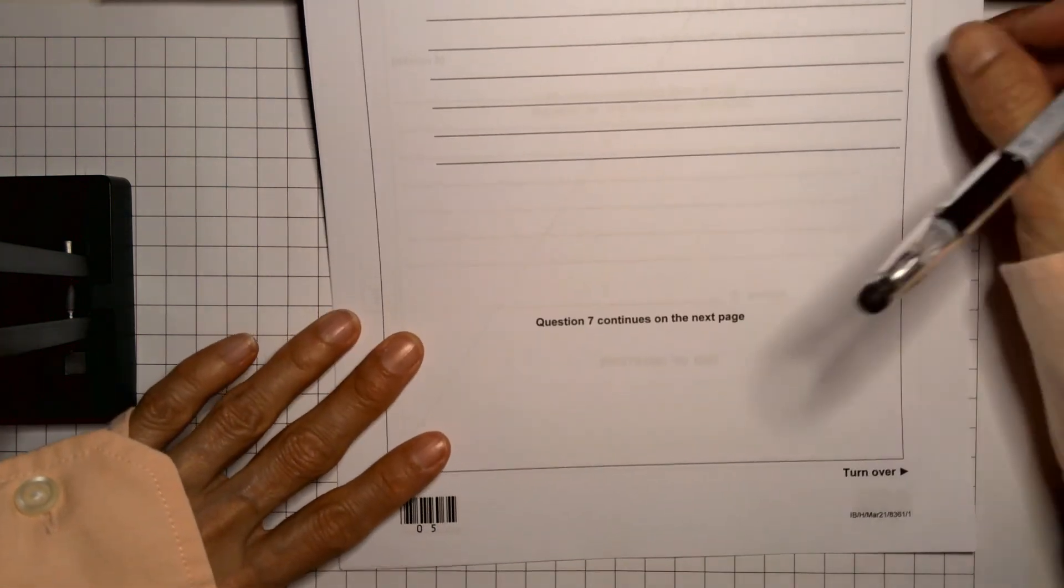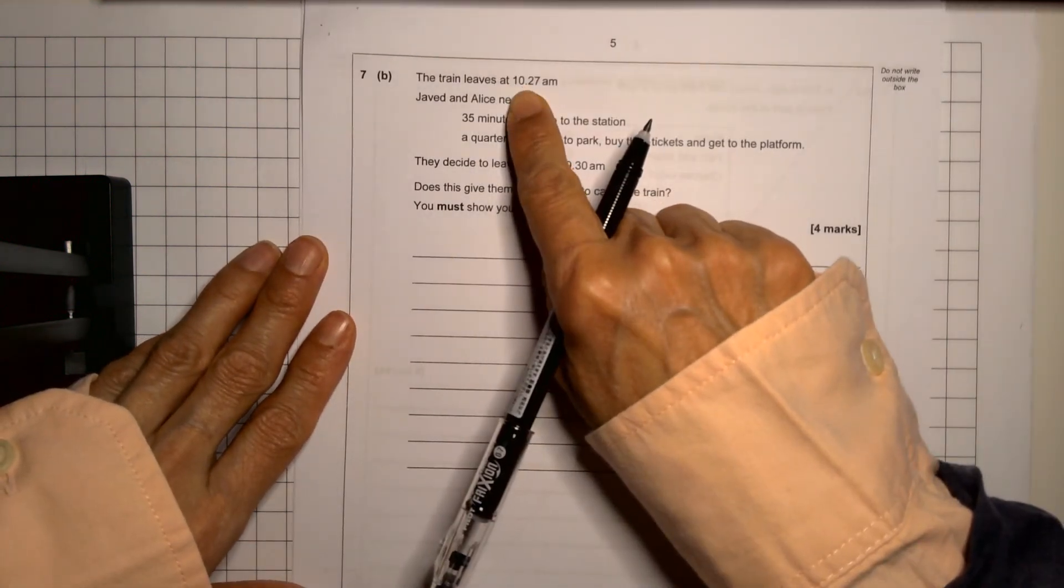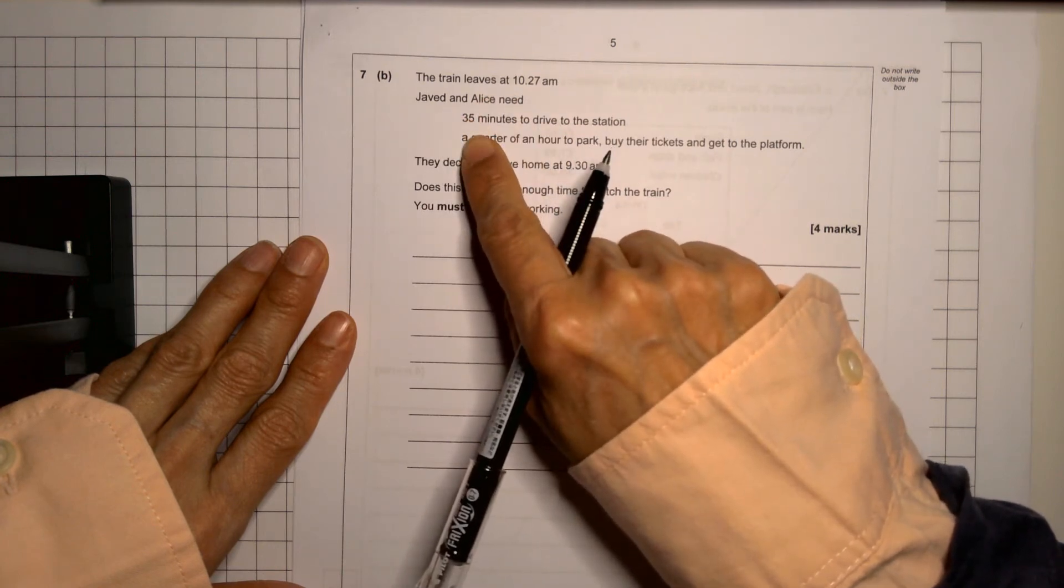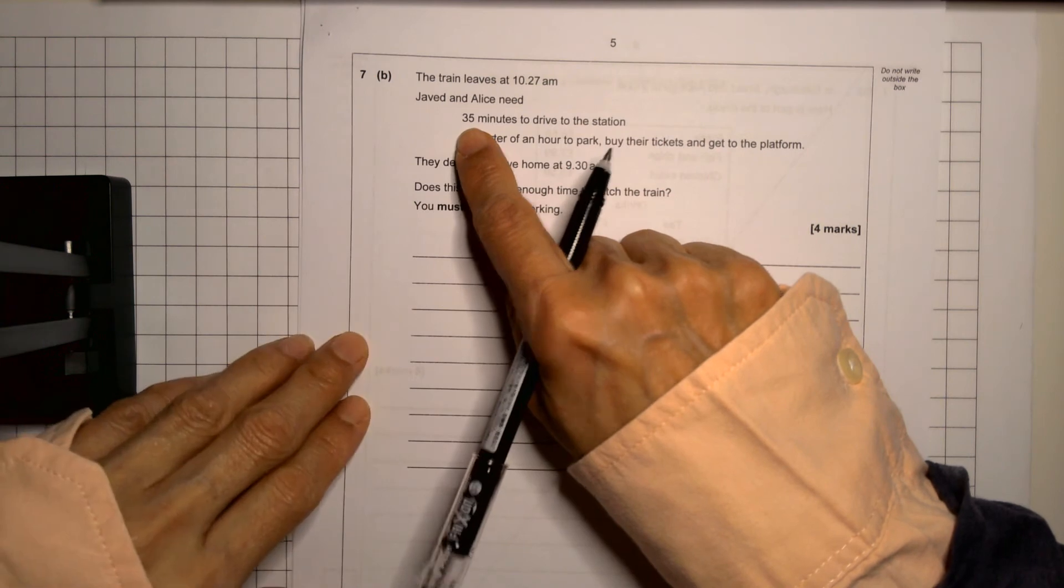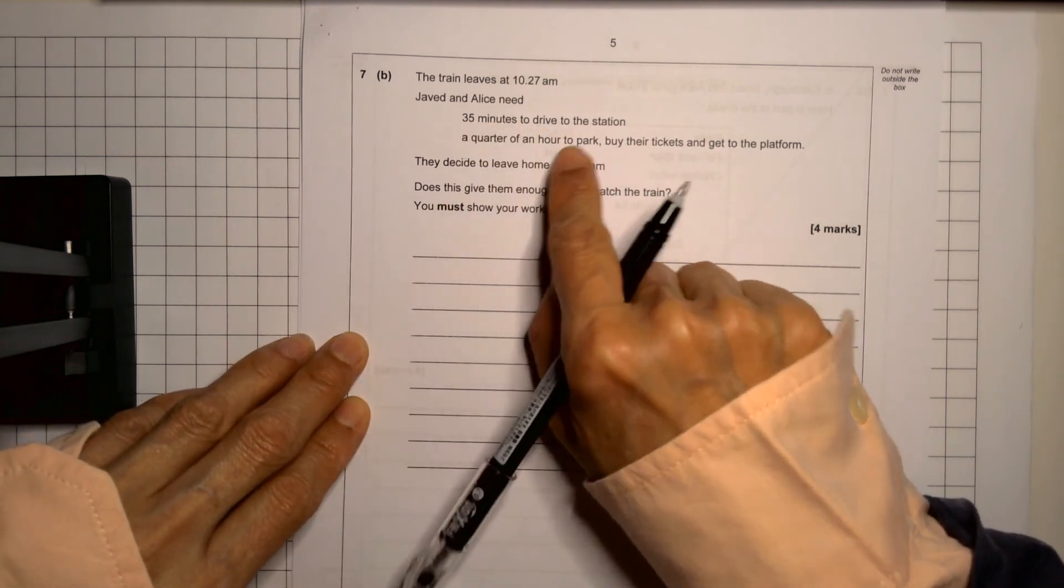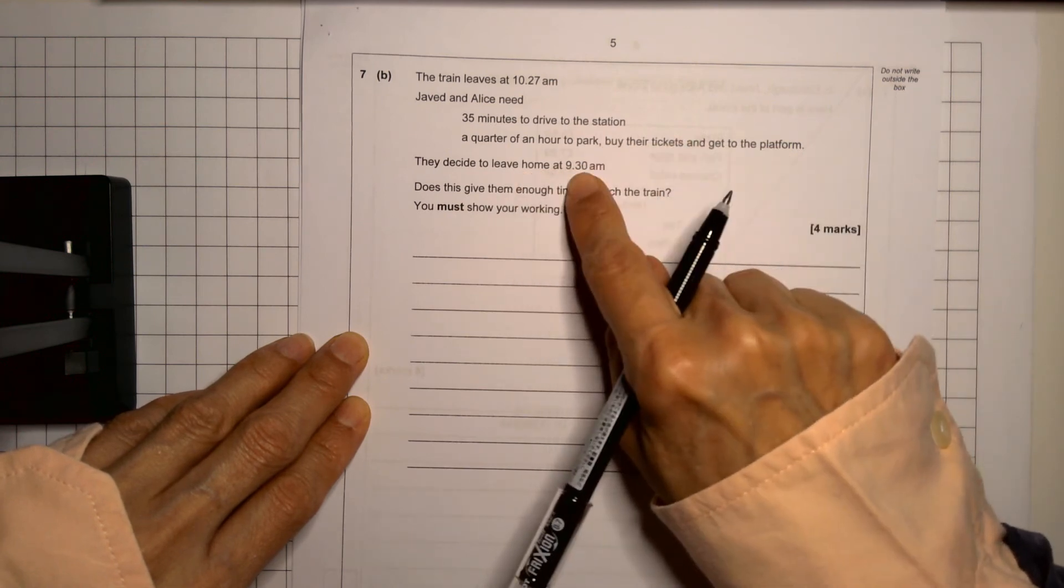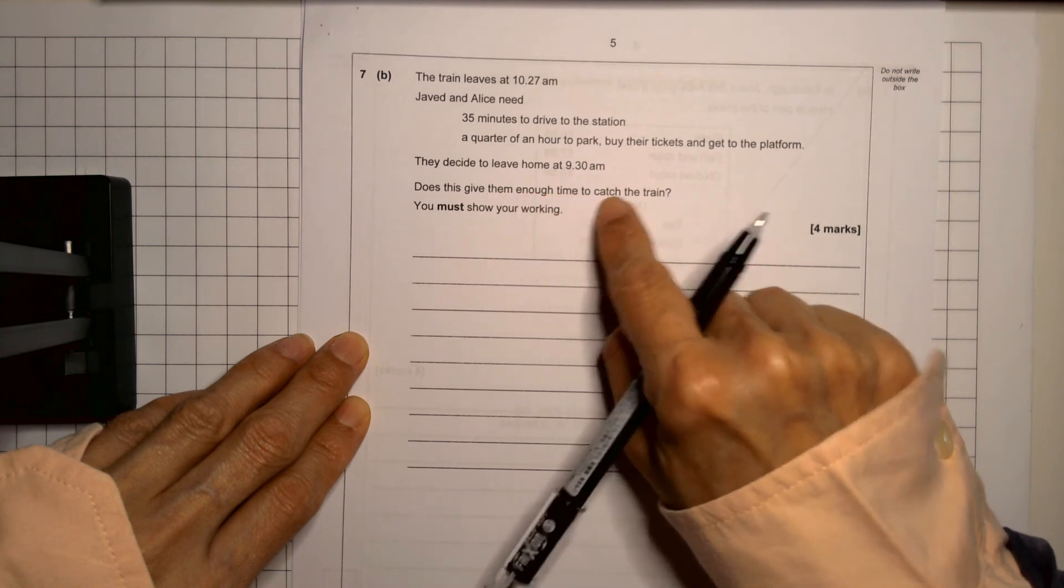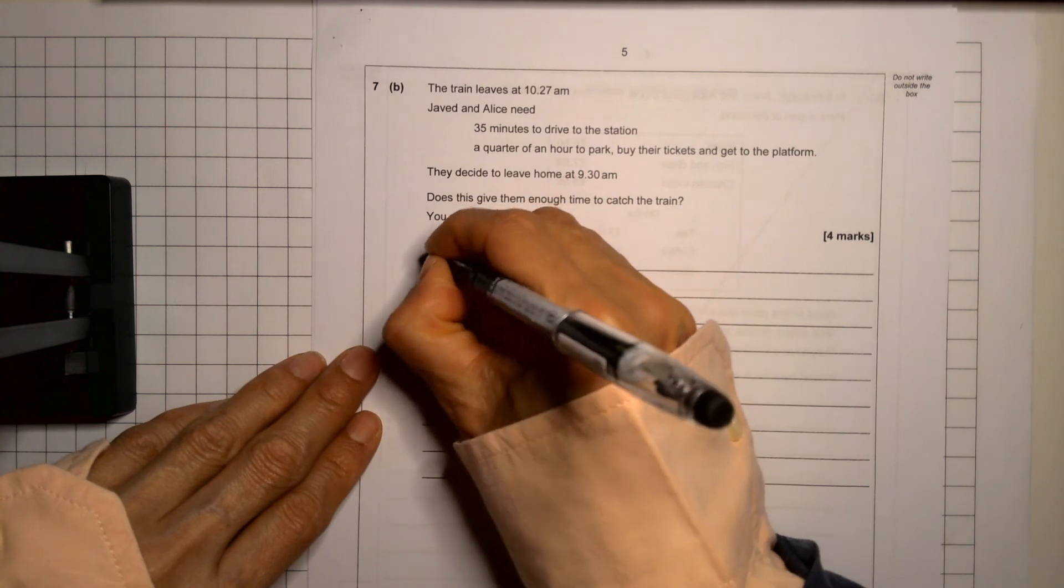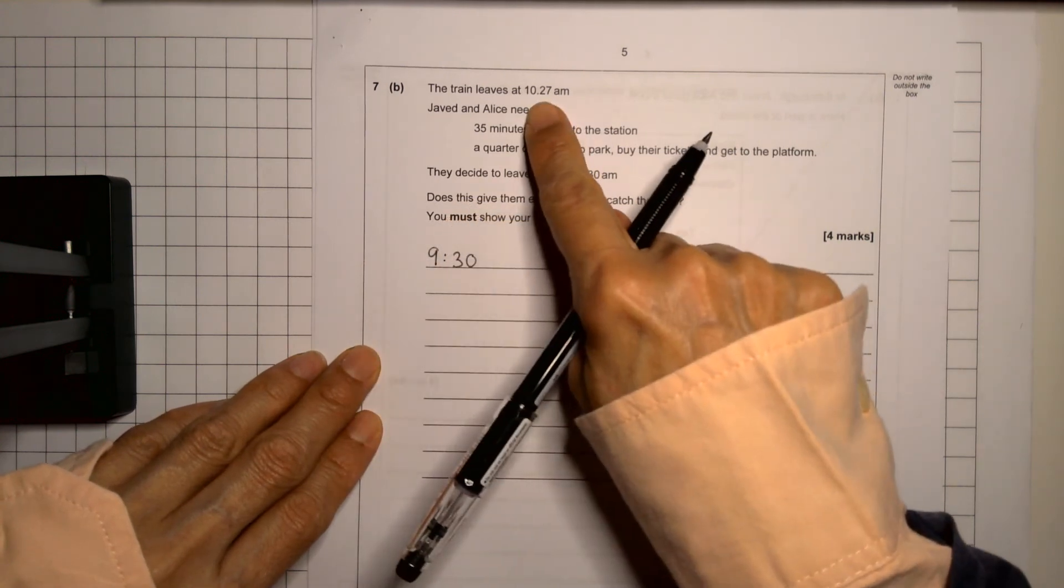So we're now on to part B of this question. And they're telling us that the train will leave at 10:27 a.m. They need to meet at the station 35 minutes. They need to 35 minutes to drive to station. They need quarter of an hour to park and then to buy the tickets and to get to the platform. They decide to leave the home at 9:30. Is that enough time to catch the train? So let's test it out. So we're going to start at 9:30. We're going to add the time onto it and see if they can get there in time to catch that train.